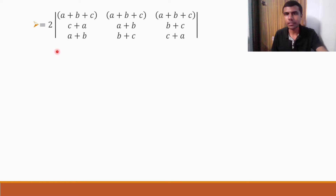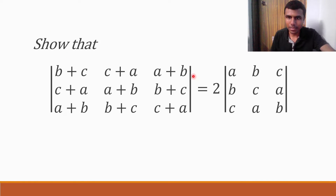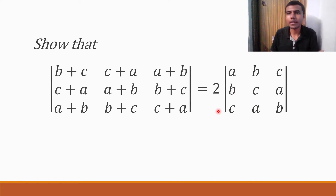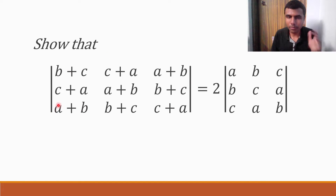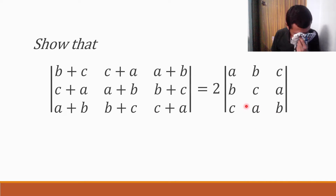Now, coming back. My next operation — you guys might think why I'm doing all this. What they have asked is to show that this determinant equals this other determinant. My ultimate job is to do operations on this determinant so that I'll get A, B, C, B, C, A, C, A, B — that is my target.